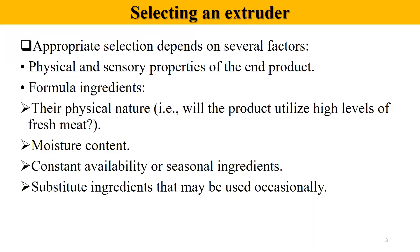Content availability and seasonal ingredients must also be considered, including substitute ingredients that may be used occasionally. A manufacturer must know whether ingredients are available throughout the year. It is not feasible to install an extruder and then face a shortage of flour or spices mid-season. There must be constant availability or storage of ingredients, and alternative substitute ingredients should be identified in advance.